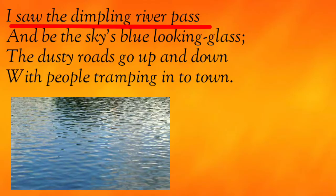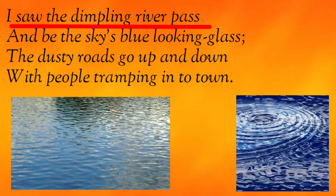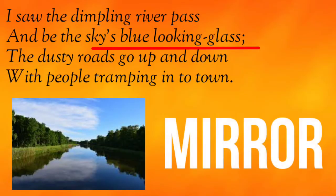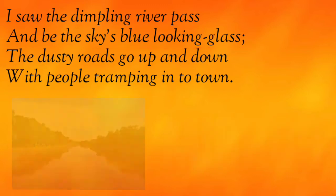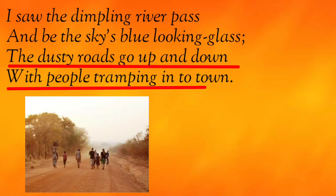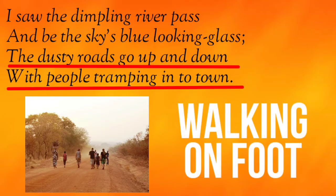What do we mean by 'dimpling river'? As the water flows, it appears as if the surface of the river has dimples — just like this. At the same time, he compares the river with the sky's blue looking glass. 'Looking glass' means mirror, so it seems that the river is the mirror of the sky. You can see here how the sky looks at its reflection in the river flowing beneath it.